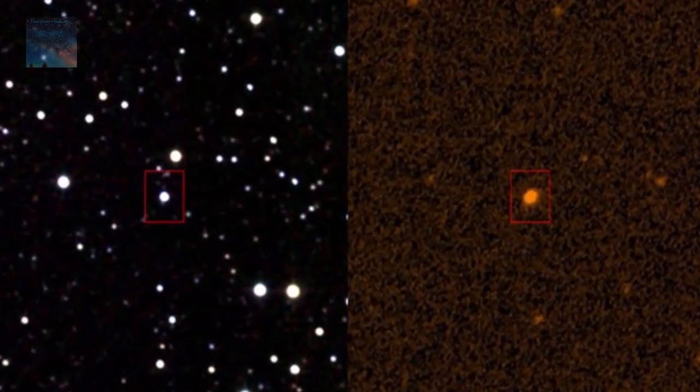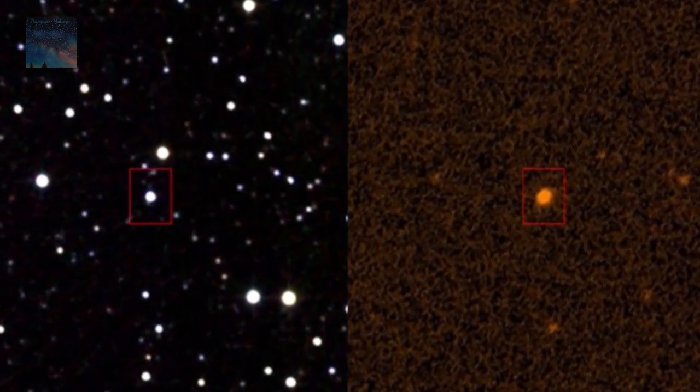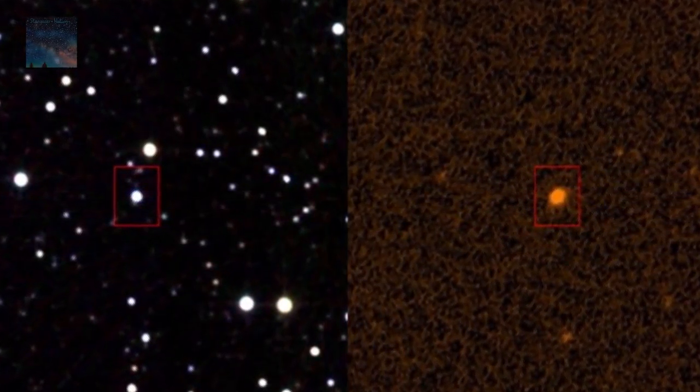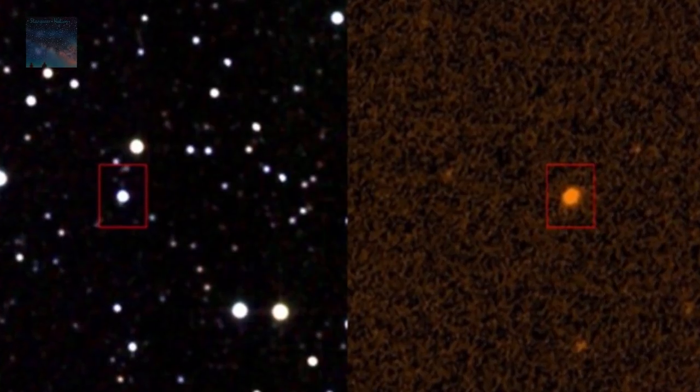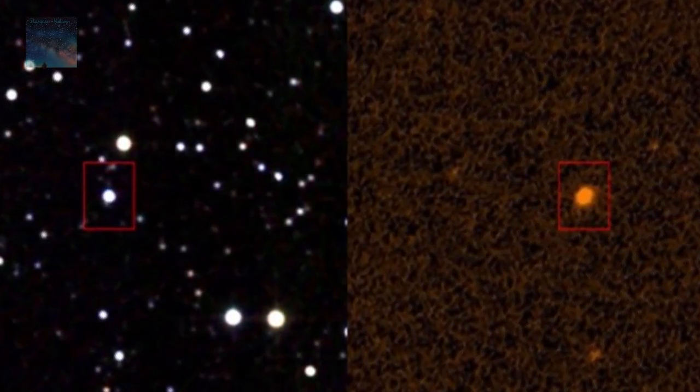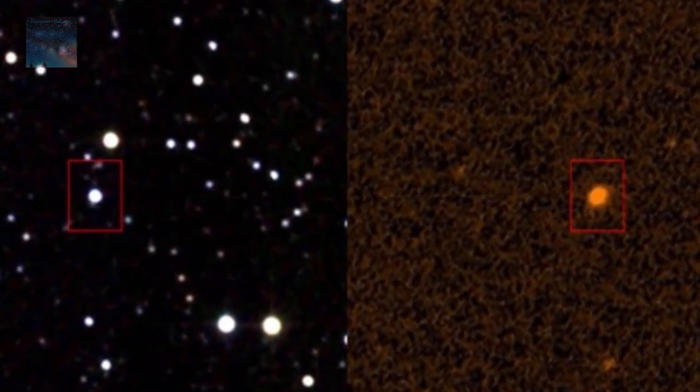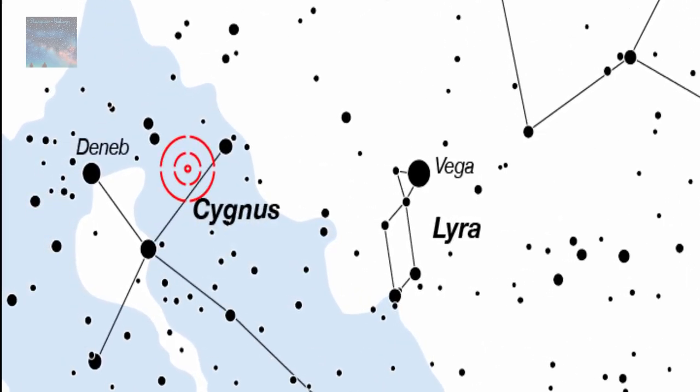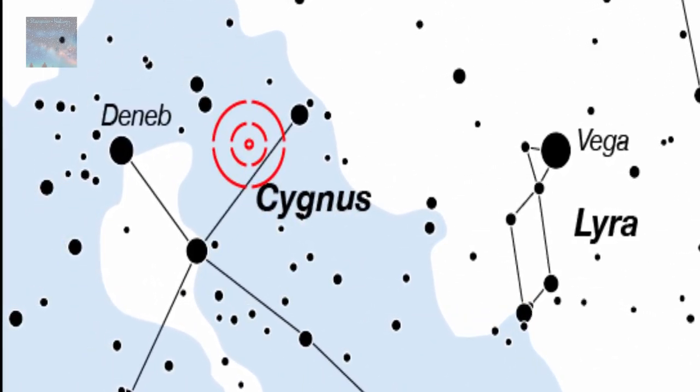First discovered in 2009, the alien megastructure star, known officially as KIC 8462852, or Tabby Star, is located about 1500 light years away between the Cygnus and Lyra constellation of the Milky Way galaxy.